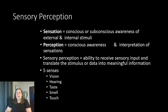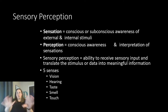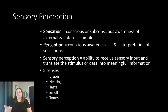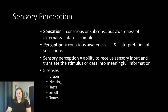In our body we have lots of different receptors that are going to be able to detect when changes occur, whether changes outside in the external environment or inside in the internal environment. This receptor is going to take that signal and send it through the nervous system up to the brain. The brain then does the next step — the conscious awareness and interpretation of the sensation — which is called perception.